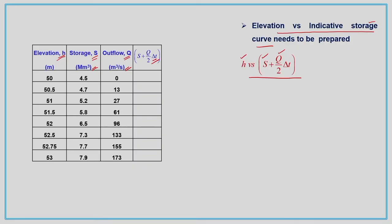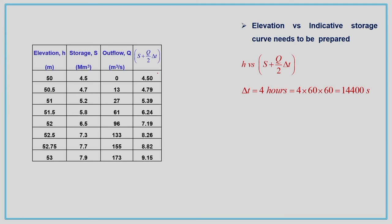The inflow hydrograph is given with an interval of 4 hours, so we take ΔT as 4 hours. Converting to seconds gives 14,400 seconds, since outflow is in meter cube per second and we need to compute Q/2·ΔT. We can then compute the indicative storage listed in the column, and plot the elevation versus indicative storage curve, H versus (S + Q·ΔT/2).